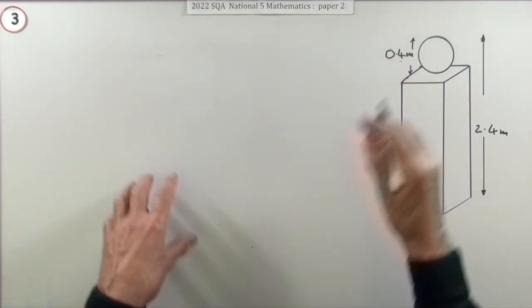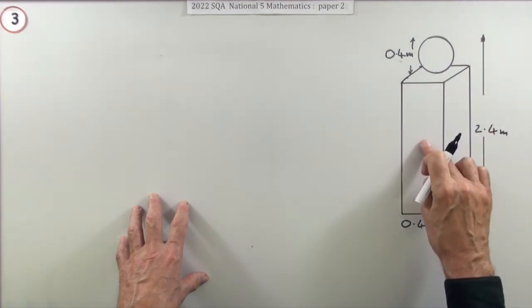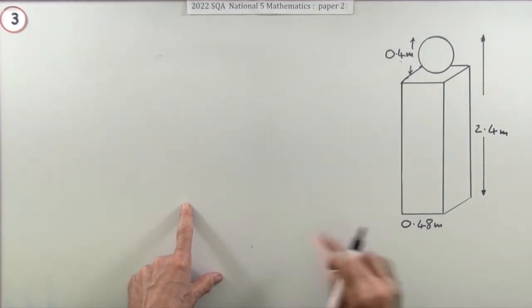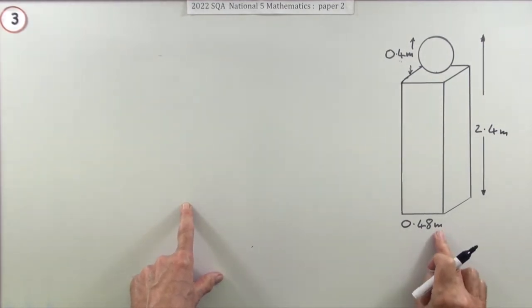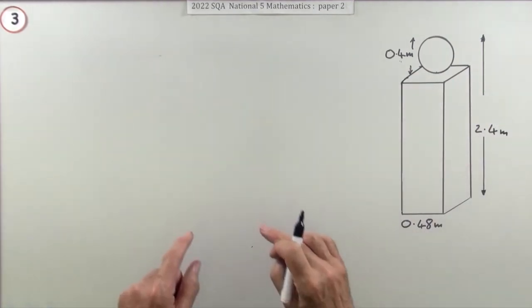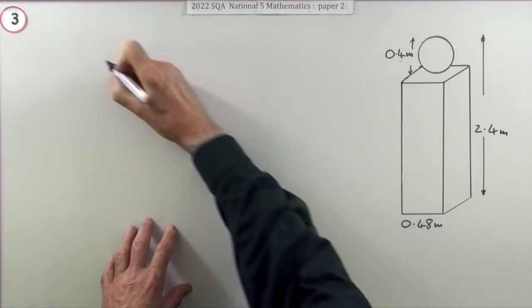It's just formula, figures, answer. You've got a sphere, work out its volume. A cuboid, work out its volume and add the two together, making sure you put the correct units in the answer whether you're sticking with meters or changing it into centimeters.